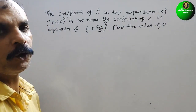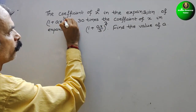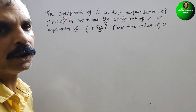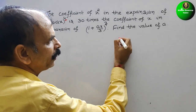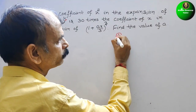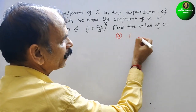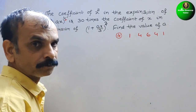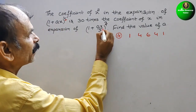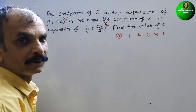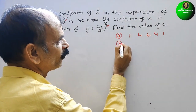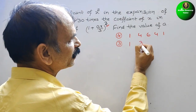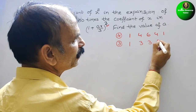First, we will use Pascal's triangle. If the degree is 4, the coefficients from Pascal's triangle are 1, 4, 6, 4, 1. And if the power is 3, then it will be 1, 3, 3, 1.